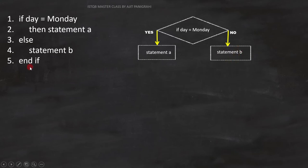The fifth line is end if. This end if is for condition on line number 1. And this is how we have to represent it on the flowchart.